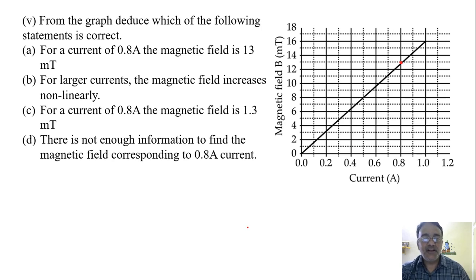For a current of 0.8 ampere, the magnetic field is 1.3 mT. 1.3 is not there. So this is also wrong. So these two are wrong. There is not enough information to find the magnetic field corresponding to 0.8 ampere current. This is also wrong because we can find it here.